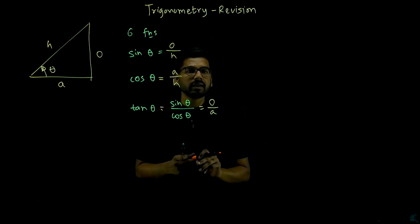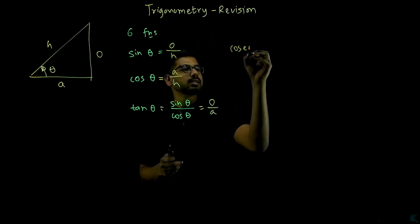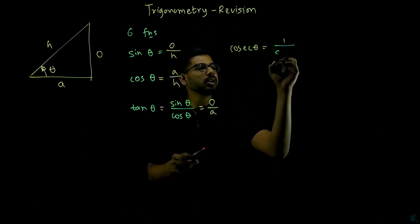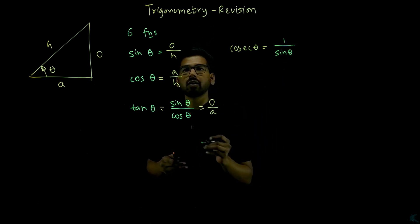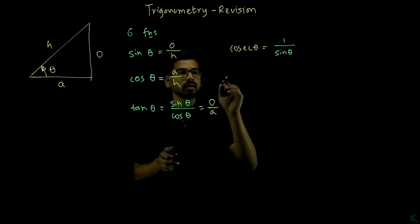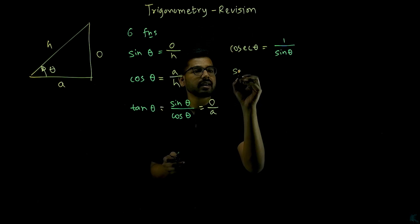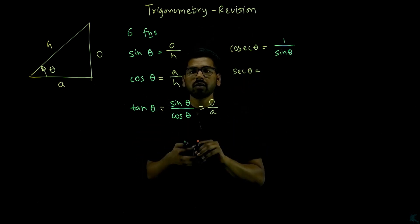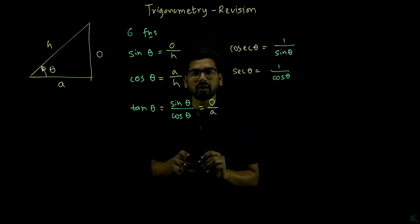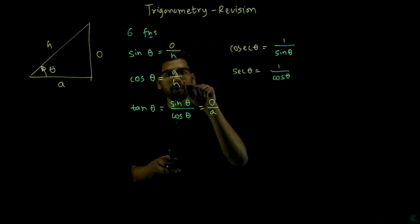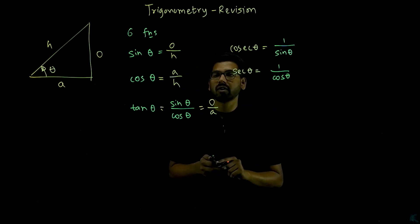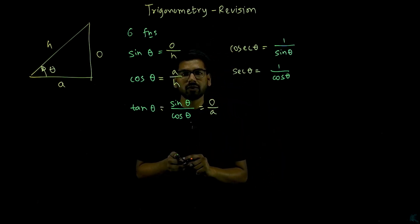The remaining three trigonometric functions are the inverses of the first three. Cosecant theta is the inverse of sine theta, so cosecant theta equals one over sine theta, or hypotenuse over opposite. The fifth trigonometric function is secant theta, which is the inverse of cos theta, so secant theta is one over cos theta, or hypotenuse over adjacent.